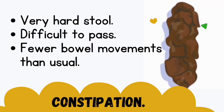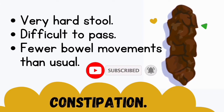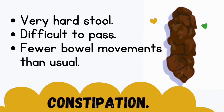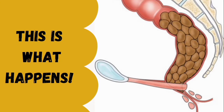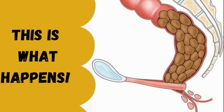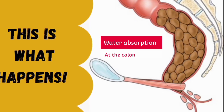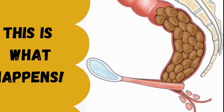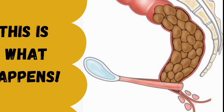Constipation, in very simple terms, is passing extremely hard stool which is usually very difficult to pass. This mostly happens when the frequency of your bowel movements is extremely reduced. As food passes through the digestive tract, nutrients get absorbed and waste is passed from the ileum to the colon, where water gets absorbed. Due to reasons like a change in diet or inadequate fiber, food passes very slowly through the colon, giving it more time to absorb water, hence hard stool and pain.